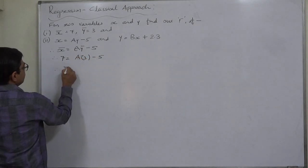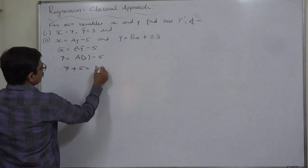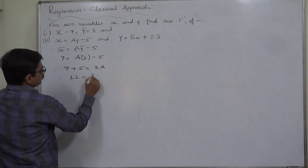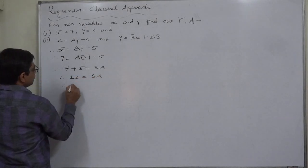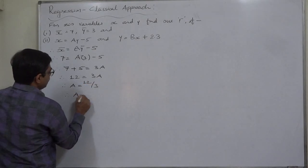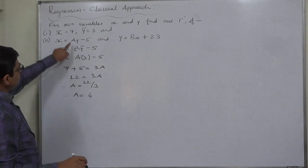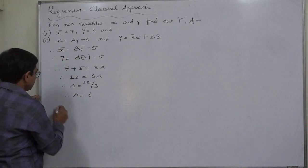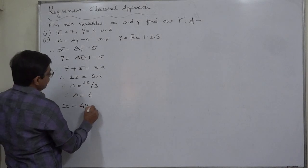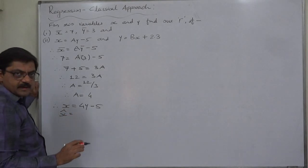That means 7 equals to a into 3 minus 5. Therefore, 7 plus 5 equals to 3a. That means 12 equals to 3a. That means a equals to 12 by 3, and that means a equals to 4. Now let's substitute 4 in the place of a in this equation. Therefore, x equals to 4y minus 5.